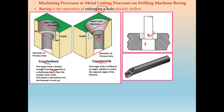There are two types of boring operations: counter bore and counter sink. In counter boring, the larger hole is drilled straight into the material at a shallower depth than the smaller inner shaft, leaving a flat bottom where a fastener or washer can be seated. The major hole diameter is enlarged for some length only, where the washer or fastener fits into the counter bore.